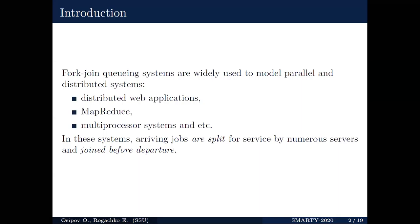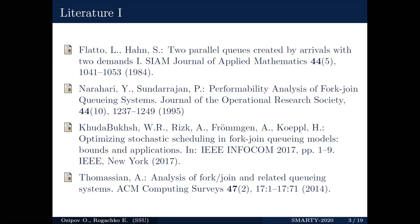Fork-join queuing systems are widely used to model parallel and distributed systems. Some examples include RAID, distributed web applications, MapReduce, grid, multipath routing networks, multiprocessor systems and so on. In this system, arriving jobs are split for service by numerous servers and join before departure. This slide contains some works that consider different kinds of fork-join queuing systems and their applications.